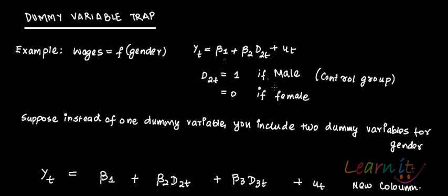Dummy variable trap. What is dummy variable trap? For example, you have wages which is a function of gender. You assume that if you are male, you probably might earn more, and if you are female, you probably earn less. Empirically, this is evident. Gender is a qualitative variable, so you have to use dummy variables for this.